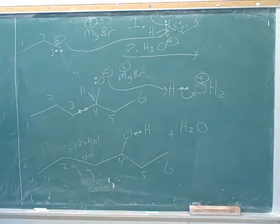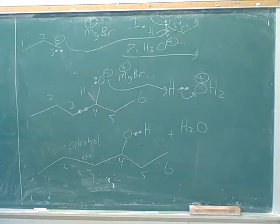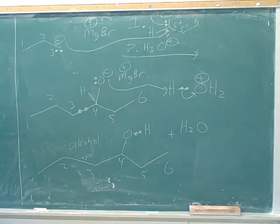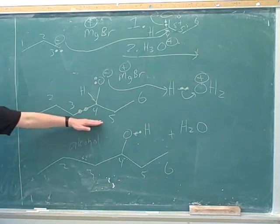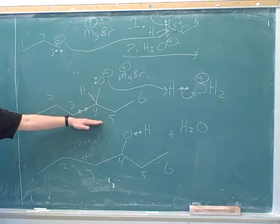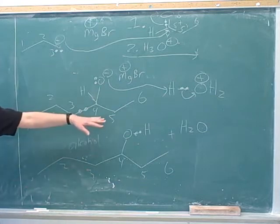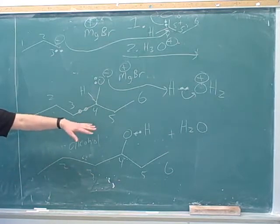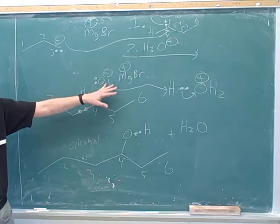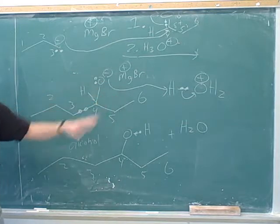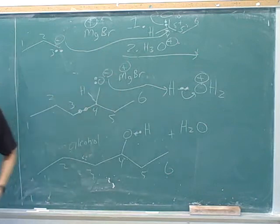What would the product have been if we didn't do the second step — if we never added the hydronium? If we had never added the hydronium, it would just stop right here. Usually you don't stop there, because you usually want an alcohol. But this would be a good test question — they could ask what happens if you don't add that second step. Well, the oxygen just doesn't get protonated. But usually you want the alcohol, so you add the hydronium.